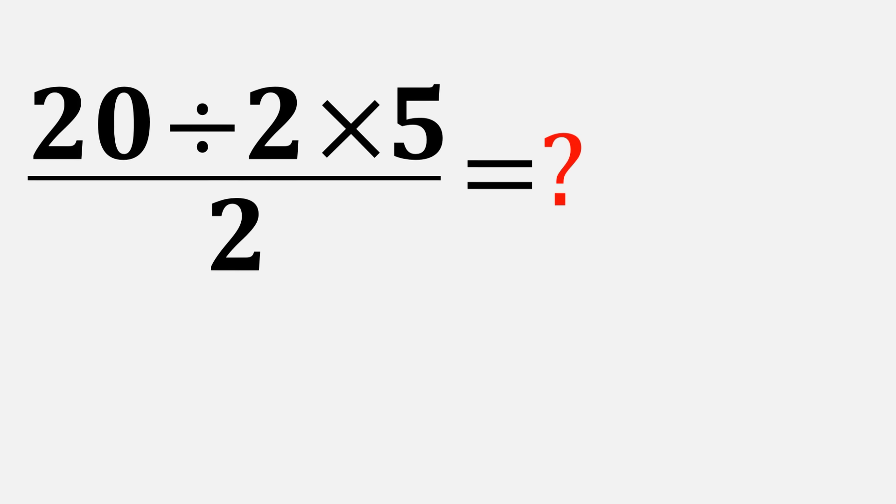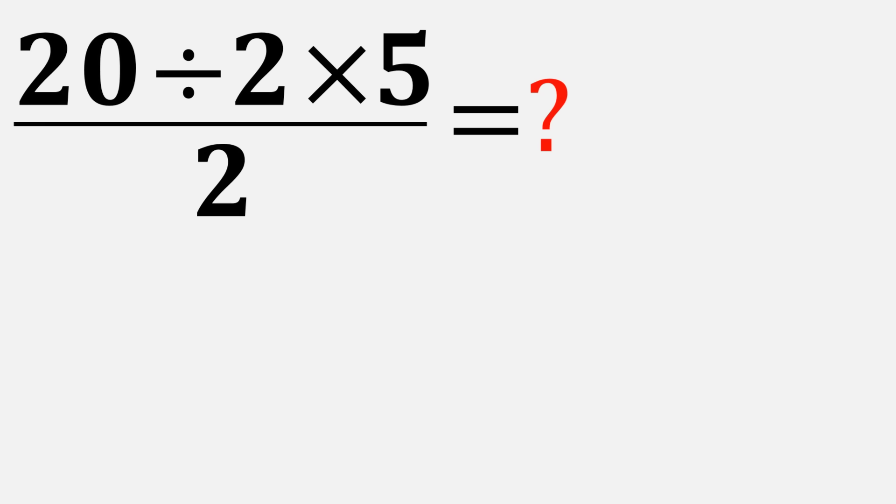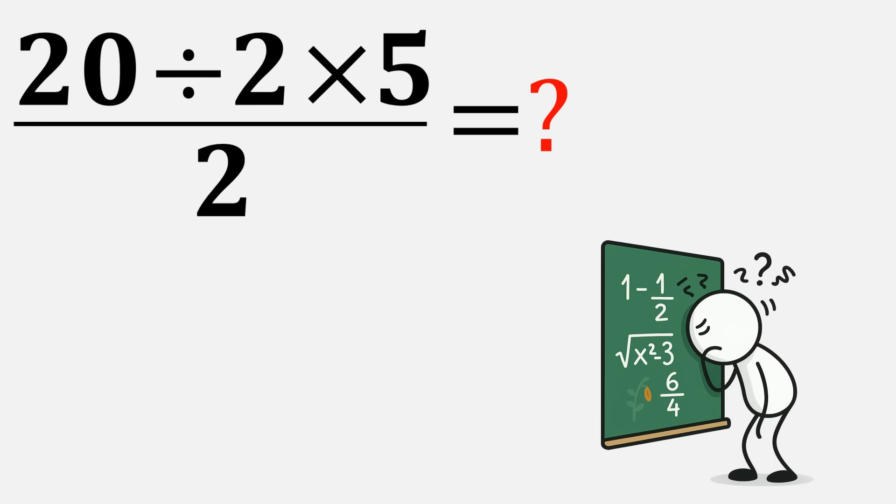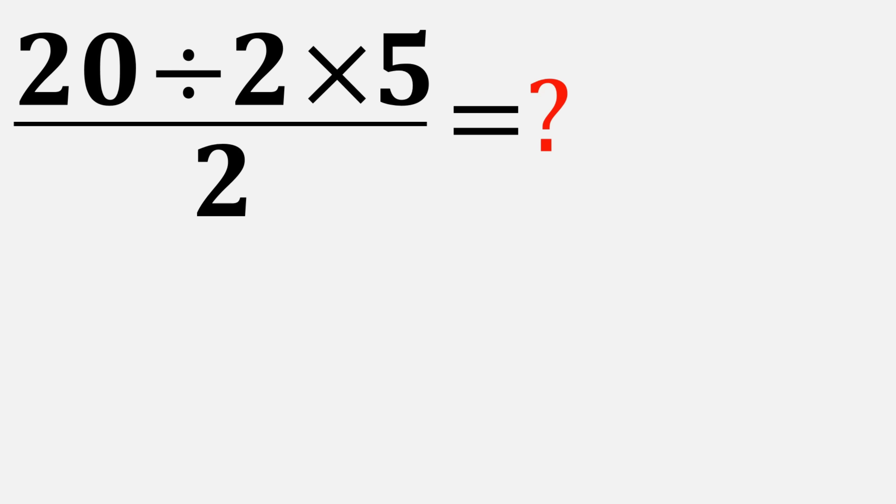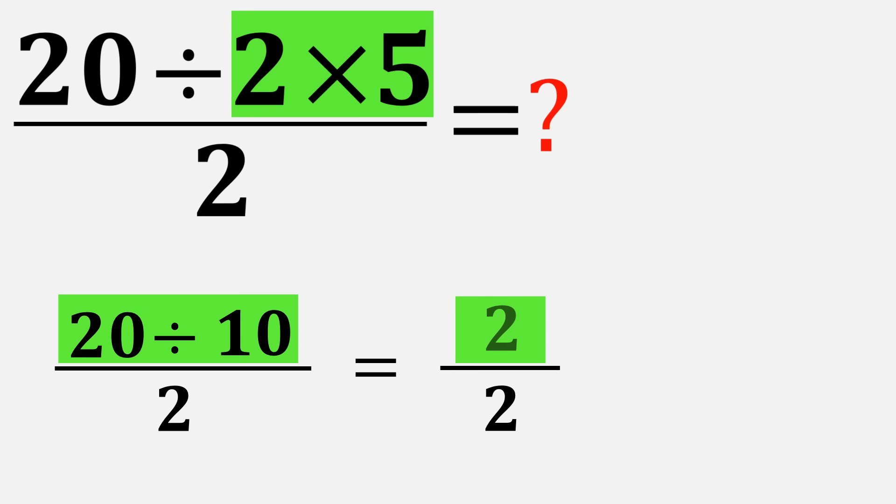Sounds easy, right? But hold on, this is exactly where so many people make a mistake. Let's break it down carefully and see what the real answer is. Now, some people might start by multiplying 2 times 5, that gives 10. Then they divide 20 by 10 and get 2. Finally, they divide 2 by 2 and end up with 1.